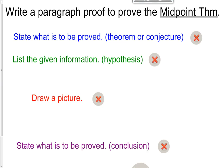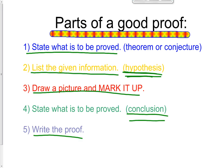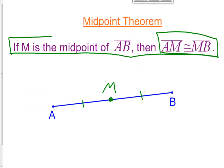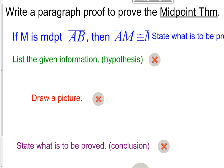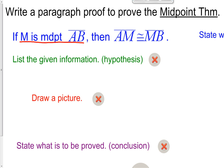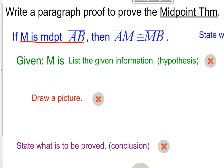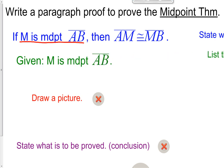Let's practice this with the midpoint theorem. Step one, state what is to be proved: we write the conditional statement in if-then form — if M is the midpoint of AB, then AM is congruent to MB. Step two, write down the hypothesis, which is the 'if' part of the conditional statement: M is the midpoint of AB. That is given to us.